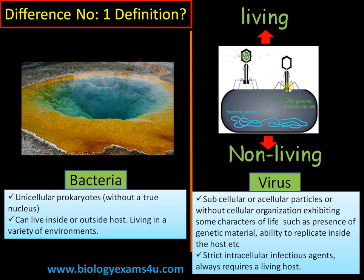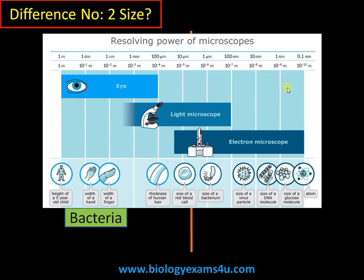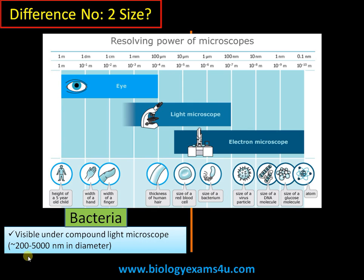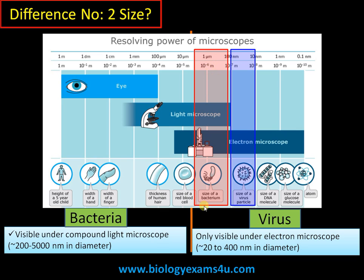Difference number two is regarding size. Bacteria are visible under a compound light microscope; the size of bacteria approximately ranges from 200 to 5000 nanometers (around one micrometer, or 10⁻⁶ meters). Whereas viruses are visible only under an electron microscope, approximately 20 to 400 nanometers in diameter. So viruses are about 10 to 100 times smaller than bacteria.